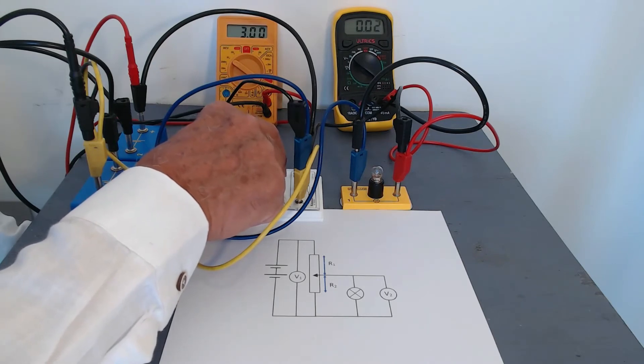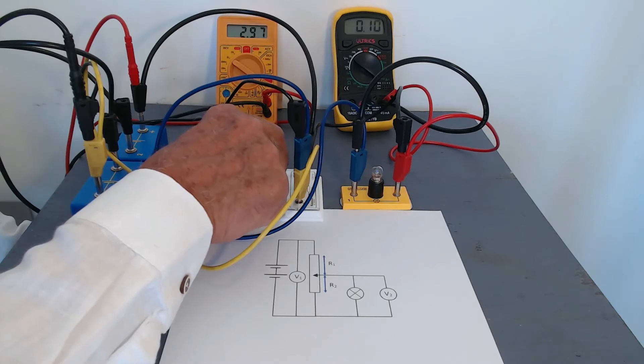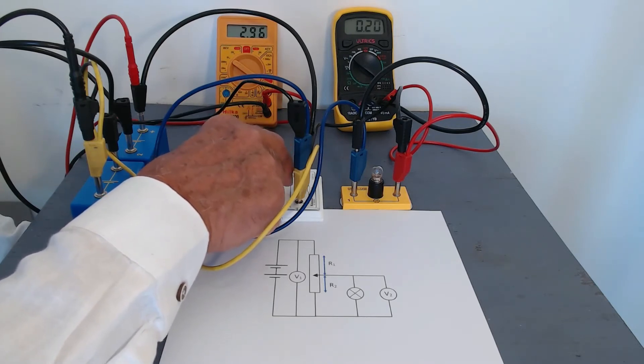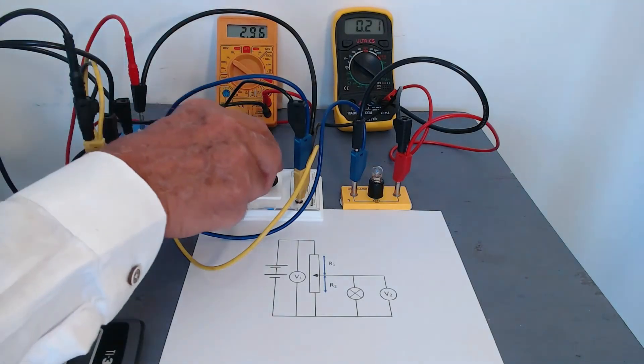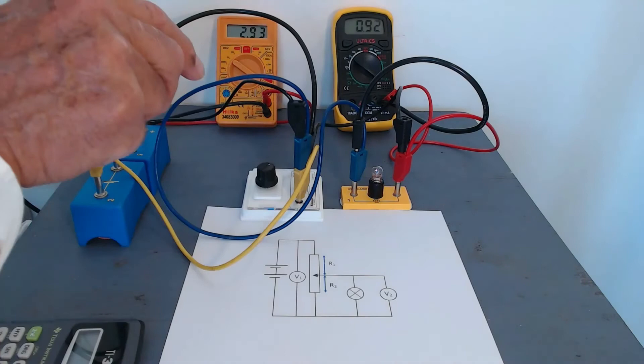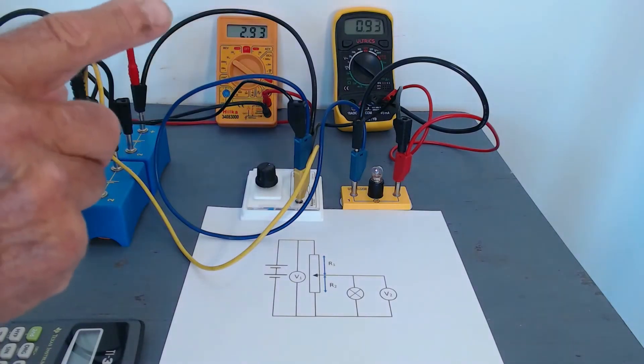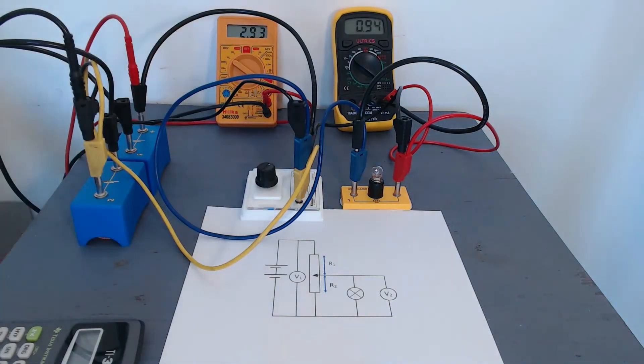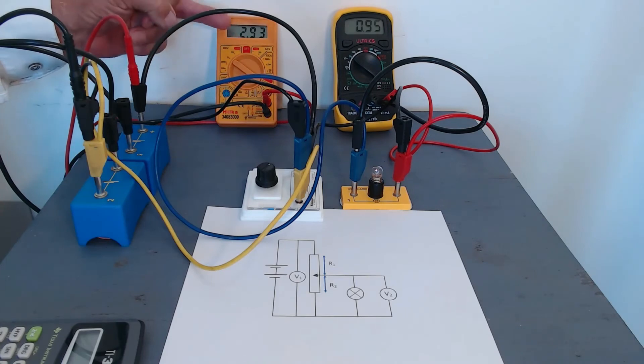But if I move it very carefully upwards, we're now applying just under 0.5, it's very delicate this. So we've got about 0.2 of a volt, still not enough to light the bulb. Just a little bit more, we're getting 0.93 of a volt across the bulb. There's a slight drop by the way in V1.